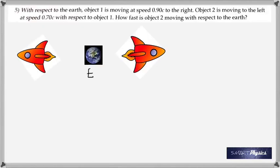Let's consider this question which says with respect to the earth, object one is moving at speed 0.90c to the right. Object two is moving to the left at speed 0.70c with respect to one. The velocity of this is given compared to this, while the velocity of one was given compared to the earth. The question is how fast is object two moving with respect to the earth?